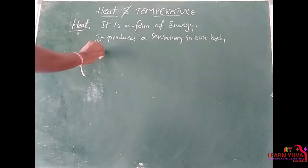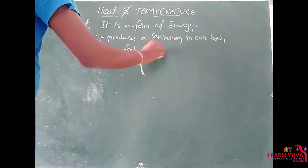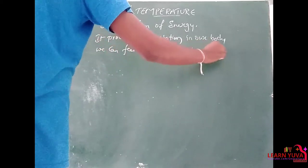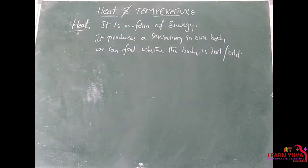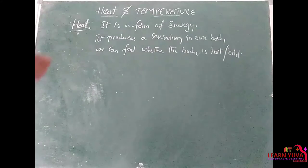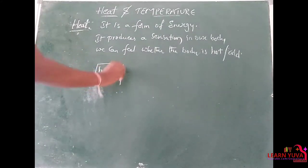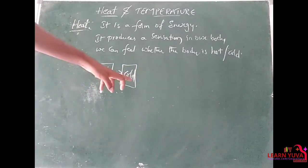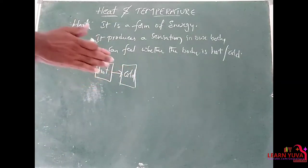We can see whether the body is hot or cold. As we already know, heat always goes from a hot body to a cold body — that means from the body of higher temperature to the body of lower temperature when the bodies are making contact.